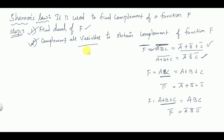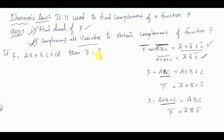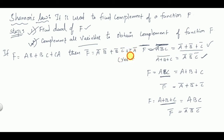Shannon's Law is also used in a different manner. Suppose f = ab + bc + ca (a previous competitive exam question). To find f̄: Step 1 is to find the dual. The dual of ab + bc + ca is (a + b)·(b + c)·(c + a).